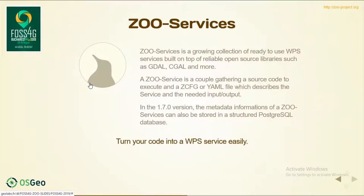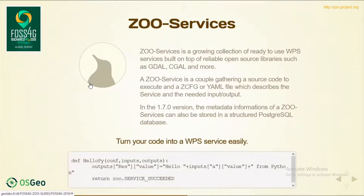Moving on to ZOO services: in the ZOO project, a ZOO service is a combination of a metadata configuration — defining inputs and outputs — plus the service code. You can use our own format using the ZOO configuration file, or you can also use YAML. In version 1.7.0 the metadata of every single service can also be stored in a relational database. The idea is to convert any existing code as simply as possible into a WPS service.